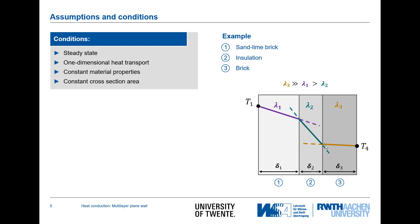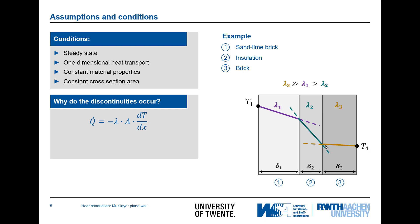Why is this the case? That is what we want to teach you in this video. Why do discontinuities occur at the boundaries of the temperature profile? For this we have to go back to Fourier's law, which states that the heat flux Q is equal to the negative of the temperature gradient multiplied by the thermal conductivity and the area.